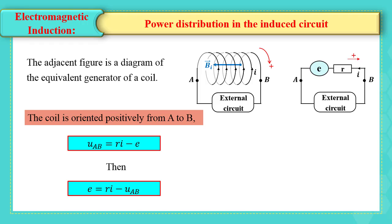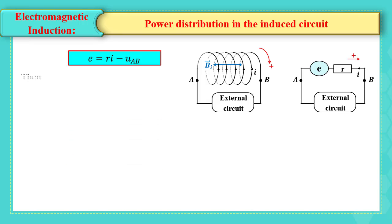Then, E, the induced electromotive force, is equal to Ri minus UAB. If we replace UBA by UAB, the equation becomes E equals Ri plus UBA.